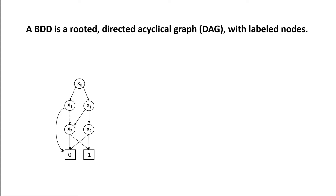As the name indicates, the one edge has the value one and is represented by solid lines, while the zero edge has the value zero and is represented by dashed lines. Choosing the solid line — the one edge — out of a node is the same as assigning the value one to the associated labeled variable. The same goes for choosing the dashed line, which assigns a zero value to the associated variable.